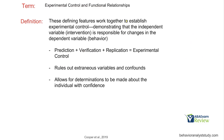These defining features work together to establish experimental control. We're looking at a functional relationship — trying to see that we are controlling an individual's behavior through our intervention. Prediction plus verification plus replication equals experimental control. We're looking to rule out extraneous variables and confounds so we can make determinations about the individual with confidence.